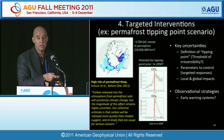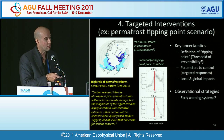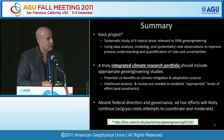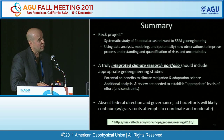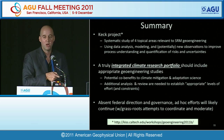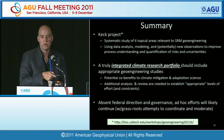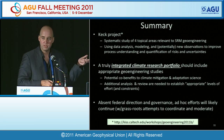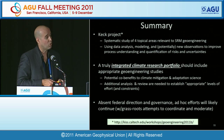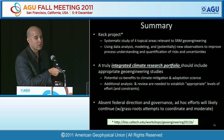There's a range of ways to mitigate this including leveraging traditional SRM techniques, with implications for early warning observational systems. In summary, we're doing a systematic study of four topical areas focused on data analysis, modeling, and observations. A truly integrated climate research portfolio should include appropriate geoengineering studies, and we should also consider potential co-benefits. Absent federal direction and governance, ad hoc efforts like our own are likely to continue — so coordinating these efforts is a grassroots effort at this point.